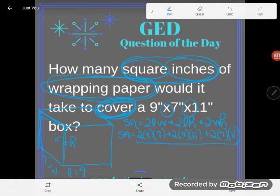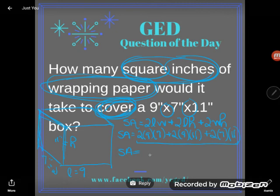7, plus 2 times 9 times 11, and your calculator even has parentheses, 2 times 7 times 11. And I get that the surface area is 478. And you might be asking 478 what? 478 square inches.